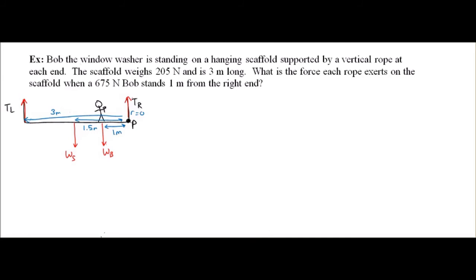Continuing with our problem-solving strategy, let's look at the forces acting on the object. I have no horizontal forces, so that equation is just zero. Vertically, I have tension on the left and tension on the right - they are not the same tension value because Bob is not standing in the very middle. I would expect the tension on the right to be a little bigger because there is more mass on that side. I also have two downward forces: the weight of the scaffold and the weight of Bob. If this is to be in equilibrium, all those forces should combine to be zero.